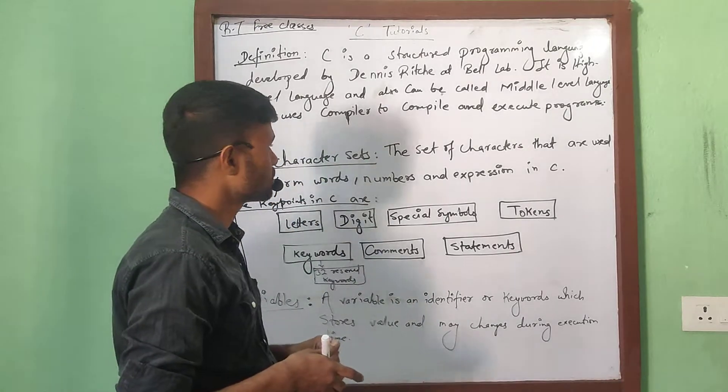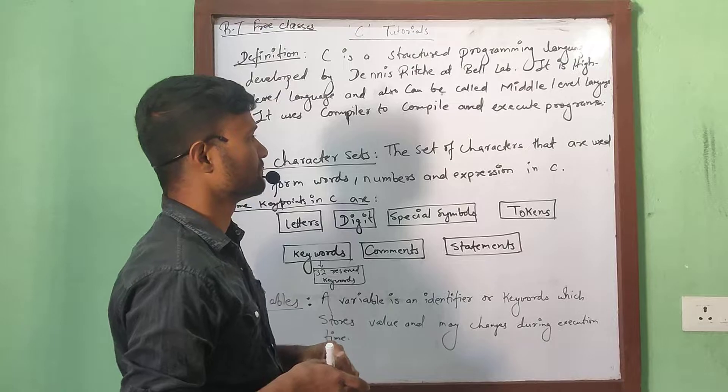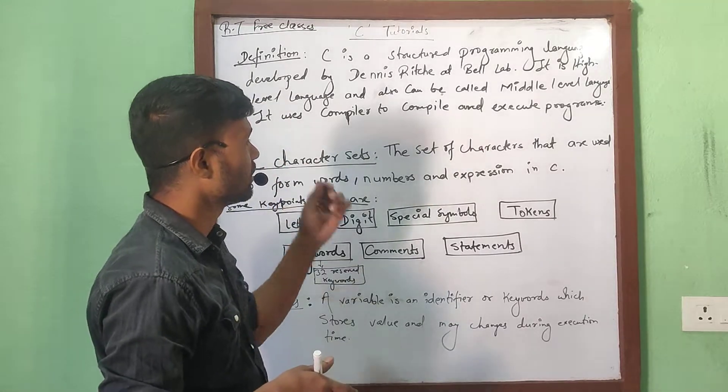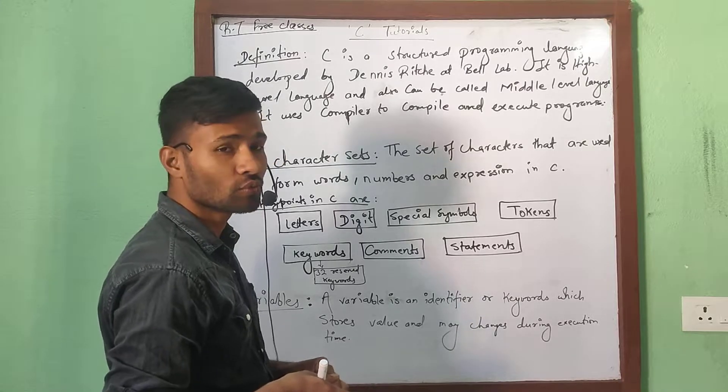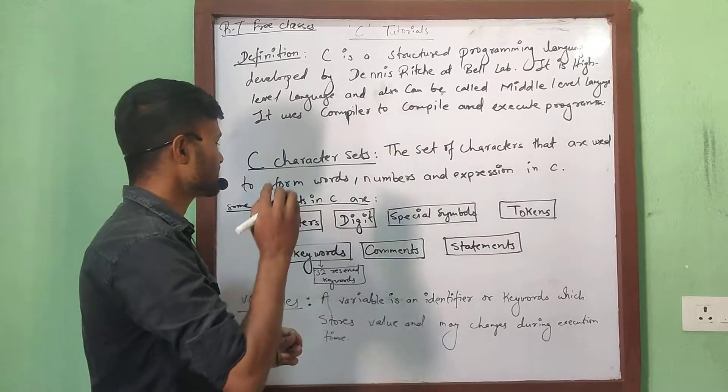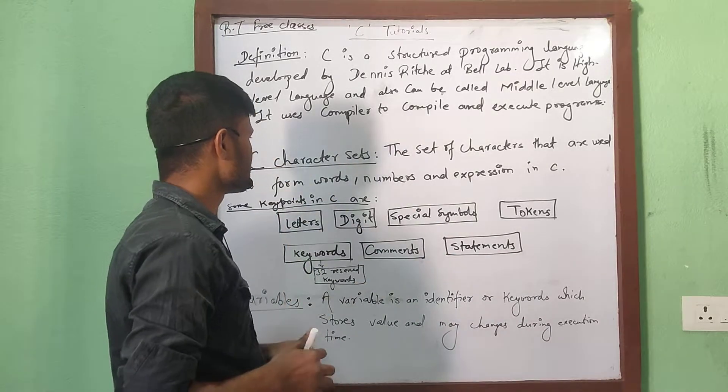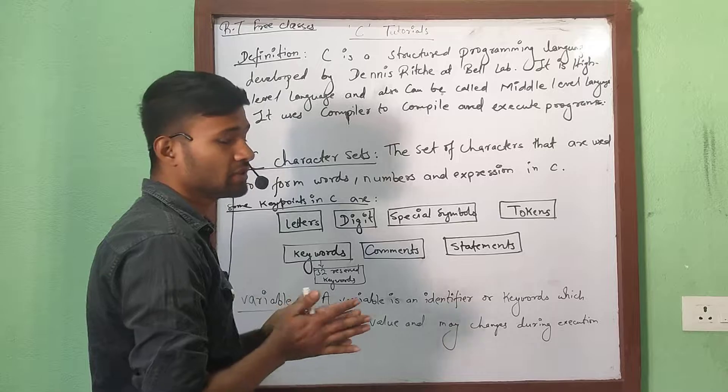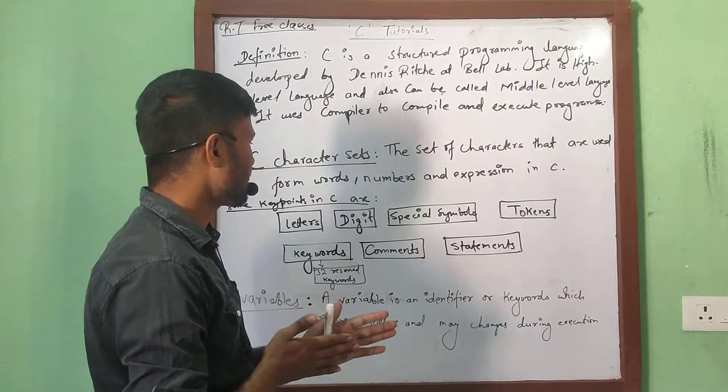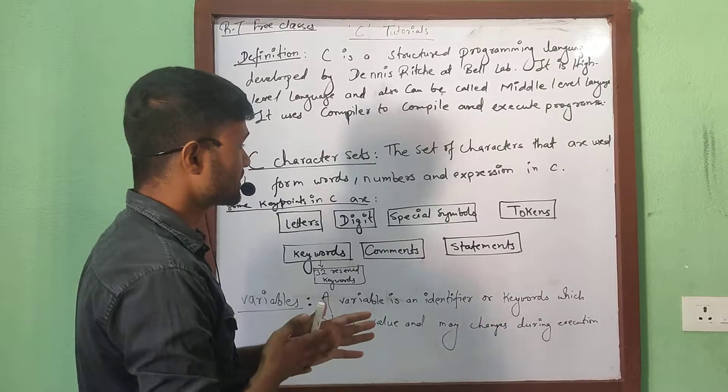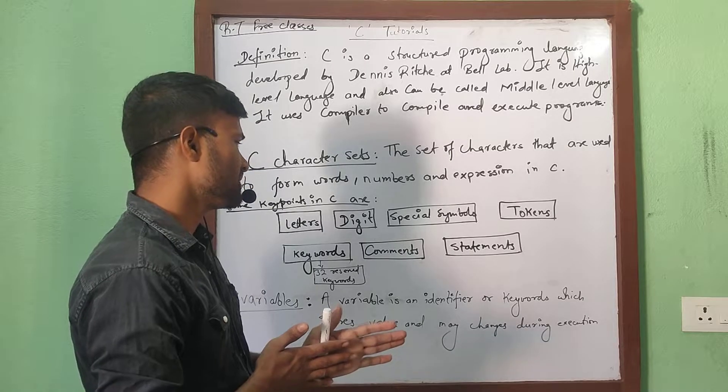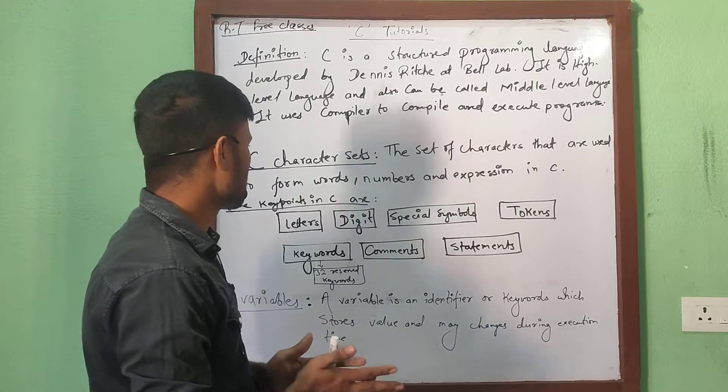That is C character sets. What are the character sets of C? The set of characters that are used to form words, numbers, and expressions in C. What will character set do in C programming? There must be something like letters, digits, special symbols, tokens, keywords, comments, statements, something like this.